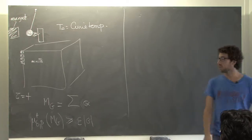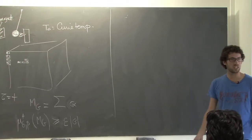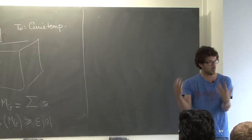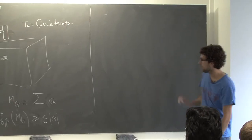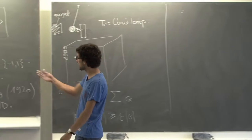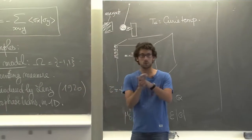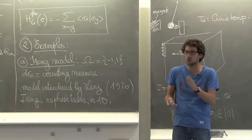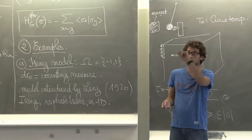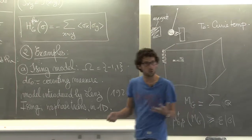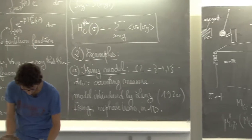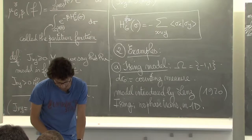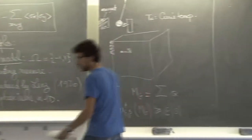Ising predicted there is never a phase transition in any dimension, concluding the Ising model is not a good model for magnetization. Because in 3D you should have a phase transition. This asked for a generalization of the model, where for instance the spin is on a three-dimensional sphere — a more natural model since the orientation of a magnet can point in any direction.